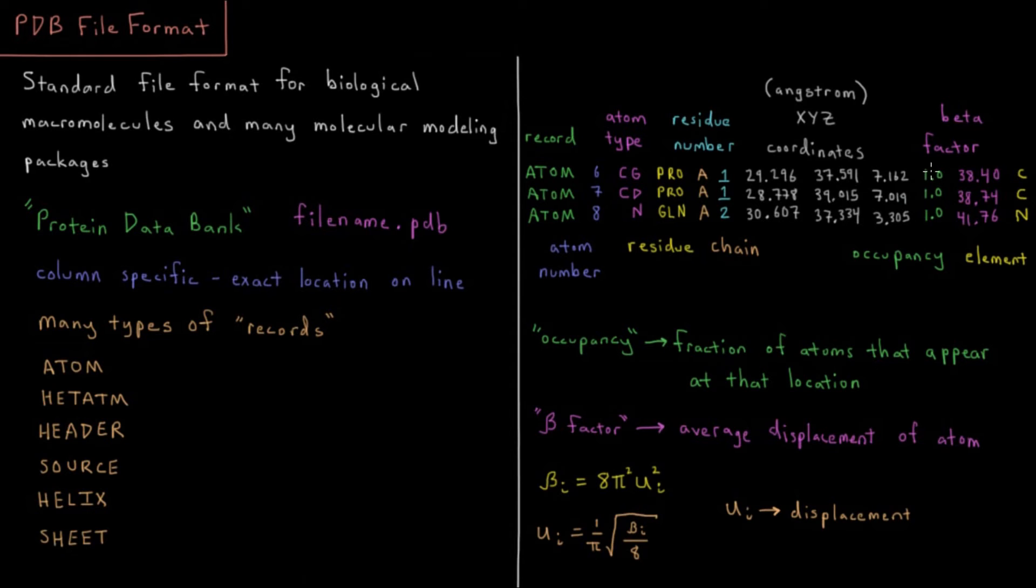There you might see two records for the same atom, but they each have an occupancy factor of say 0.5, 50%, or maybe 30%. Those can vary as well. If it's a high resolution crystal structure with a single major conformation, most of your occupancies are pretty much going to be one.